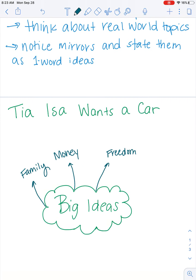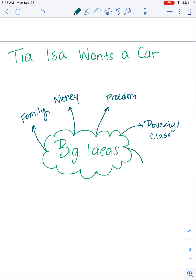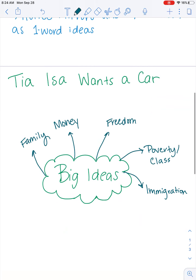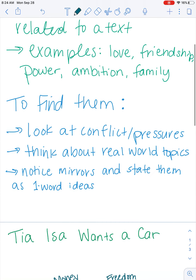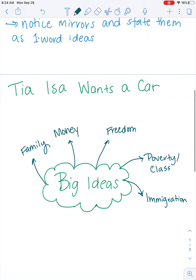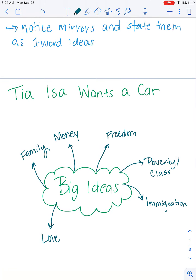We talked about those real-world topics — this is related to money, but we talked about poverty and class, which are big ideas. We talked about immigration, which is a big idea. And we can notice mirrors and state them as one-word ideas or windows. With family, I noticed how loving the family was, so love could maybe be a big idea in 'Tia Isa Wants a Car.'